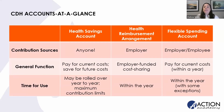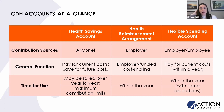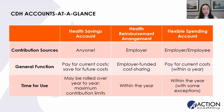Consumer-driven health accounts, or CDH accounts, give employers and consumers some additional flexibility in using their healthcare dollars. We'll highlight three types: health savings accounts, health reimbursement arrangements — sometimes also called health reimbursement accounts — and flexible spending accounts. We'll also take a peek at more nuanced ones like QSERAs and ICHRAs. The chart on screen right now provides a brief overview of all three accounts, and we'll go into more detail in a moment.